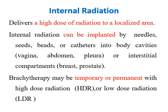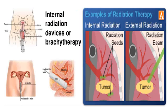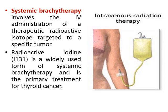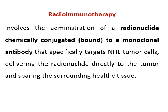Brachytherapy may be temporary or permanent, with high or low dose radiation. Systemic brachytherapy involves IV administration of a therapeutic radioactive isotope targeted to a specific tumor. Radioactive iodine (I-131) is a widely used form of systemic brachytherapy and is the primary treatment for thyroid cancer. Radioimmunotherapy involves administration of a radionuclide chemically conjugated (bound) to a monoclonal antibody that specifically targets NHL tumor cells, delivering the radionuclide directly to the tumor while sparing surrounding healthy tissue.